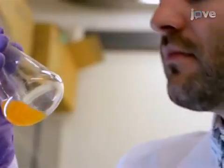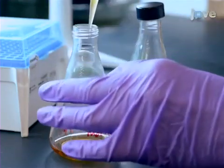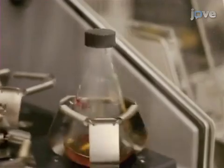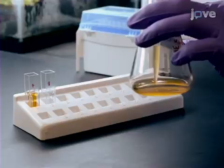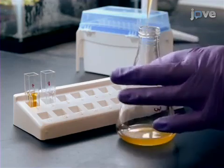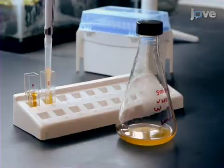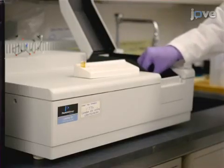Once it is grown up, inoculate 10 milliliters of fresh KTY medium with 500 microliters from the saturated starter culture. Incubate for 3.5 hours at 35 degrees Celsius and 150 RPM until the cells reach an optical density at a wavelength of 600 nanometers of 0.8 to 1.0. This represents approximately 5 times 10 to the 8th cells per milliliter.